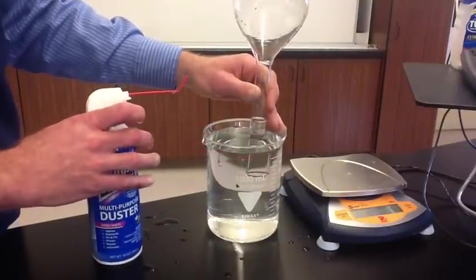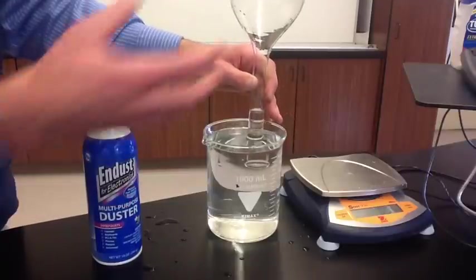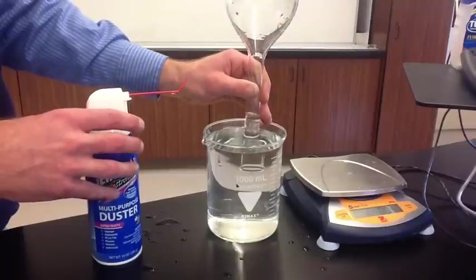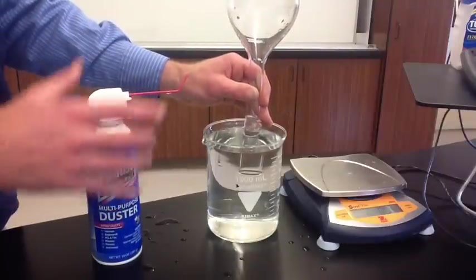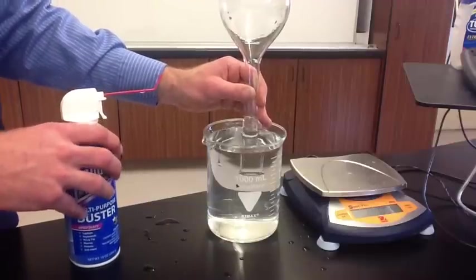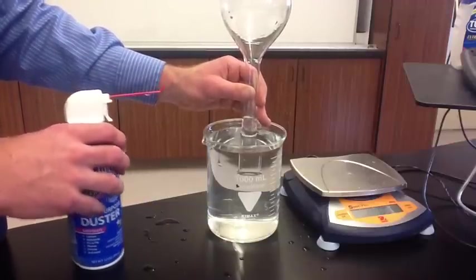It looks pretty close. We're right to the 500 milliliter mark. So we have 500 milliliters of gas collected in this flask by the water that was displaced. We know the pressure inside of this container is the same as atmospheric pressure, which today is 101 kilopascals.